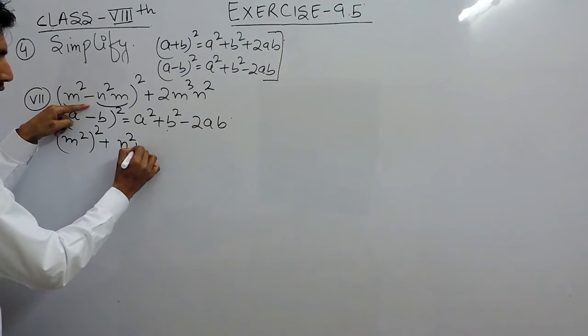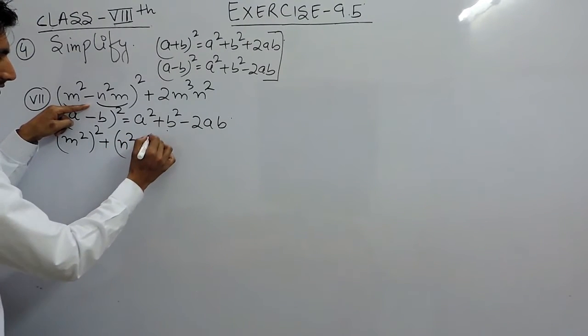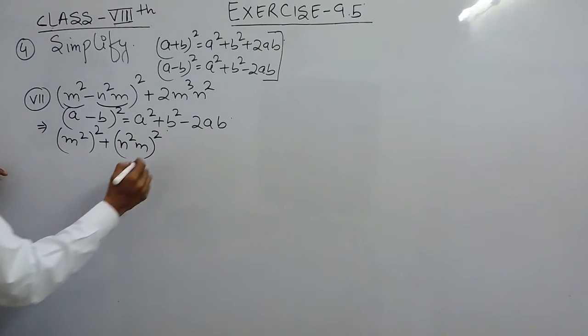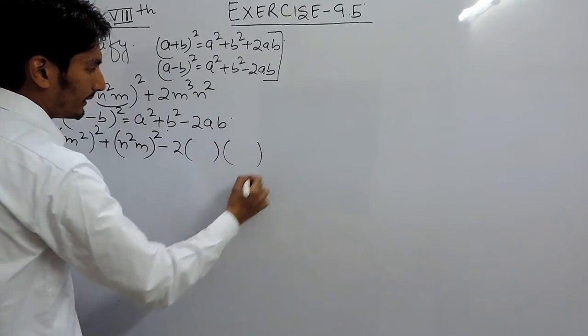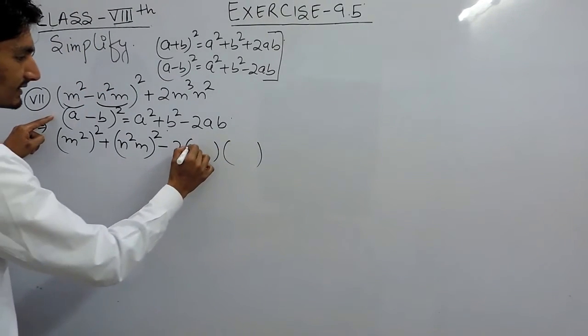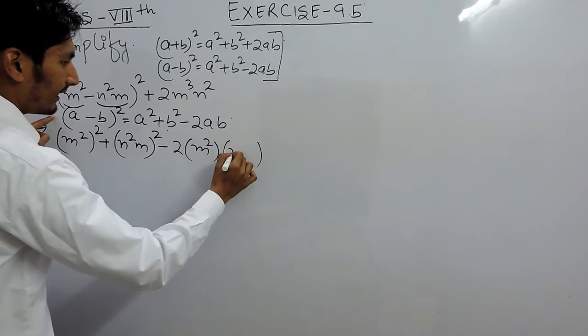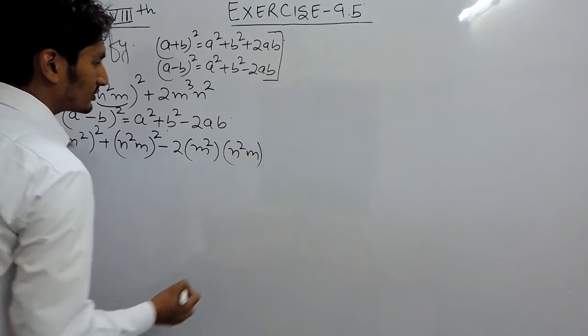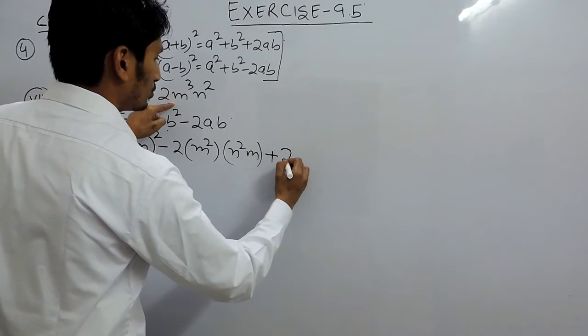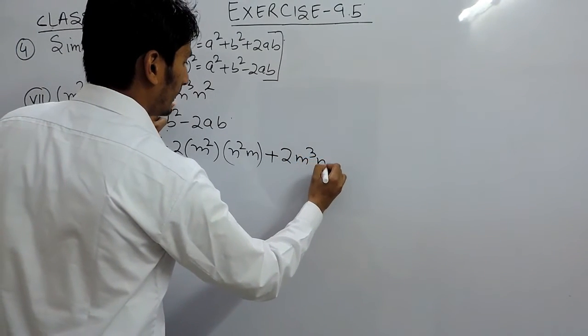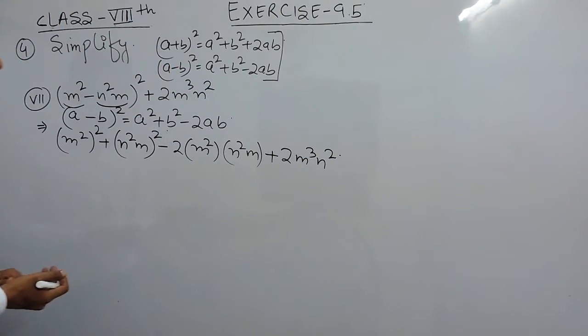Our b is n²m, so this is complete square and now at the last minus 2 into a into b, and our a is m² and our b is n²m. At the last, this expression 2m³n² will remain as it is.